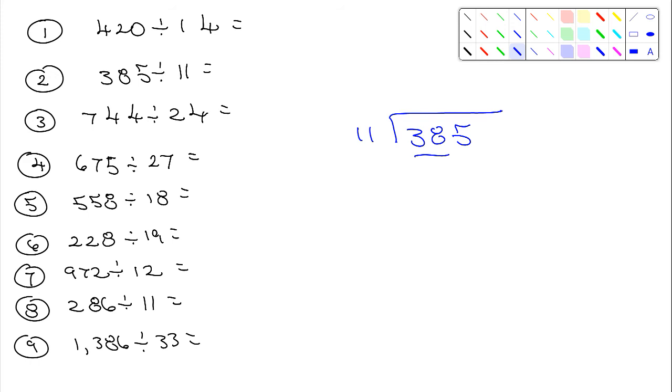Well, you guys should know your 11s by now, at least the single digits. 11 times 1 is 11, 11 times 2 is 22, 11 times 3 is 33, 11 times 4 is 44. That's obviously too big, so it's going to be 33.